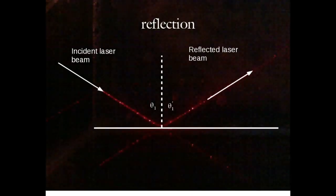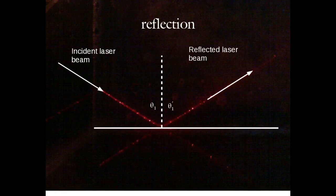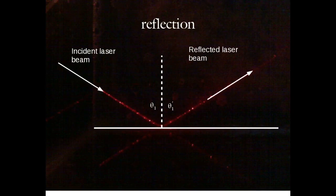Let's begin by looking at the phenomenon of reflection — or specifically, specular reflection. Specular reflection is where an incident beam of light, represented here by a narrow laser beam of red light, strikes the surface and reflects at a well-defined angle with respect to a normal to the surface. On the left is our incident laser beam indicated with a white arrow. There is a reflective surface represented by the horizontal white line. That surface is characterized by a line perpendicular to it at all points — this is a flat surface, so there is simply one of these. It's called a normal, indicated by the vertical dotted line.